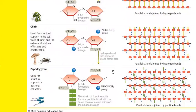We'll talk briefly about peptidoglycan in a future lesson. Peptidoglycan is a linkage of sugars one after the other with short peptides in it. It is at least partially a polysaccharide and is found in bacterial cells.